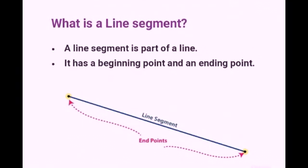Dear students, let us learn what is a line segment. A line segment is a part of a line. It has a beginning point and an ending point. From the diagram, you can easily understand it is a line segment as it has two ending points.